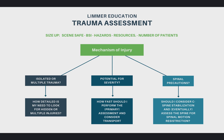I look at mechanism of injury as having three main branches — three decisions, three points that mechanism of injury gives us as we move forward into other parts of the patient assessment. First: is this injury isolated or is it multiple trauma? And if it's multiple trauma, how much do I need to look for those hidden or multiple injuries? Secondly, what's the potential for severity? We don't need to wait for our primary assessment or vital signs to tell if there's a potential for severity.